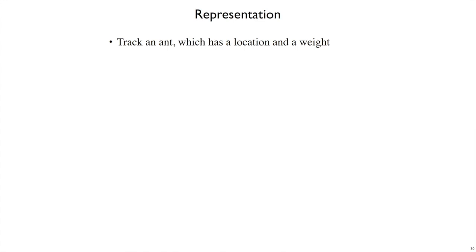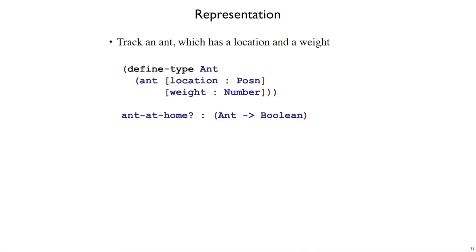Suppose we want to track an ant. An ant is going to have a location and a weight, because that's what we've decided we care about for ants. We could have x and y coordinates and a weight as three numbers together. Or a location sounds like a position, so we could use a posin that we've already defined and add a weight to it. Either choice is fine — I'm going to go with using a posin and another number for our ant.